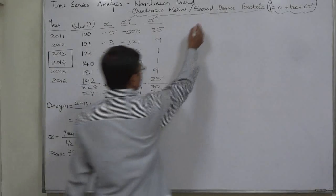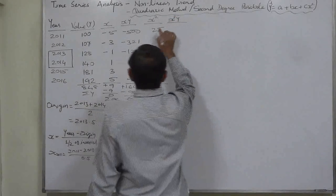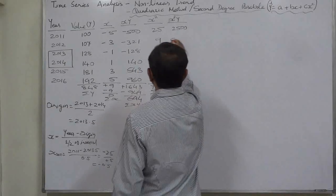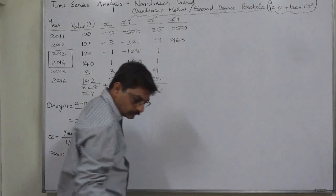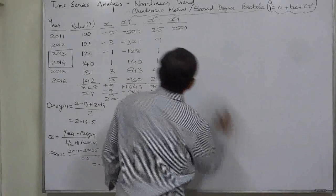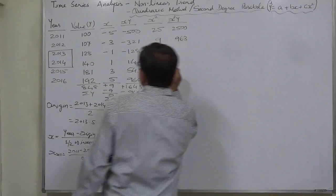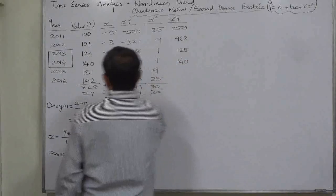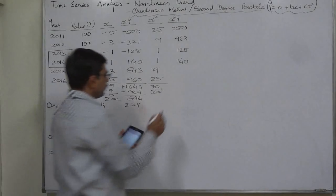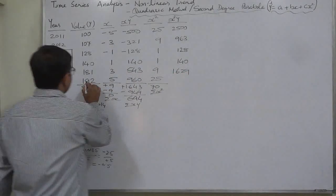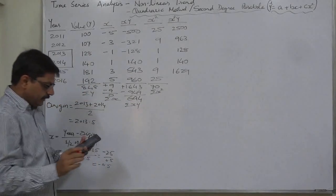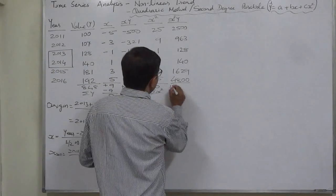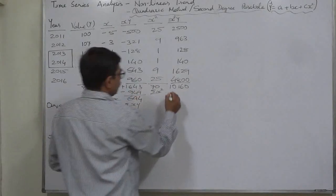In the case of a second degree parabola, we also need X²Y. Computing: 100×25=2500; 107×9=963; 128×1=128; 114×1=114; 181×9=1629; 192×25=4800. The summation ΣX²Y = 10160.